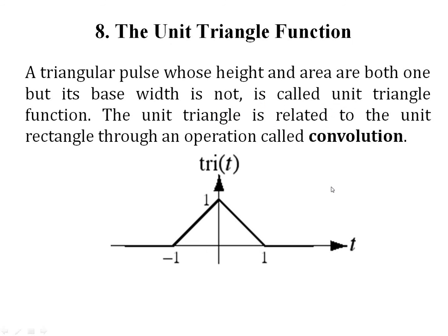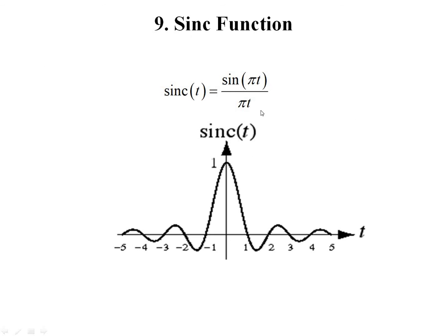The next signal is the unit triangular signal — a triangular pulse whose height and area are both one but its width is not, is called a unit triangular function. The last function is the sinc function, mostly used in communication-related concepts. The sinc function is represented as sinc(t) = sin(πt)/(πt). The sinc function has a main lobe and decaying side lobes, with most energy concentrated in the main lobe. The zero crossing points occur at n = 1, 2, 3, 4 and so on.